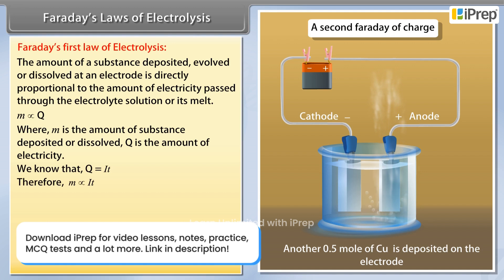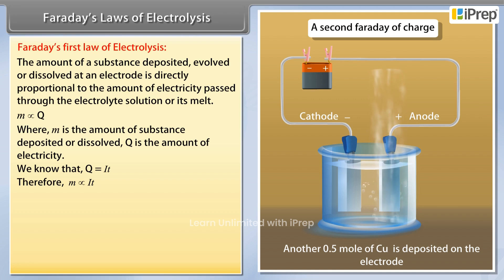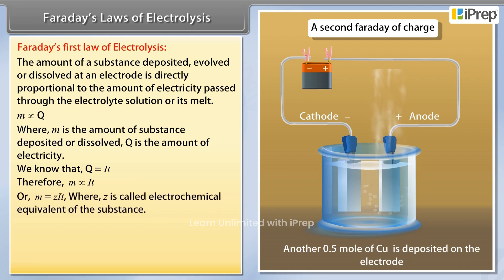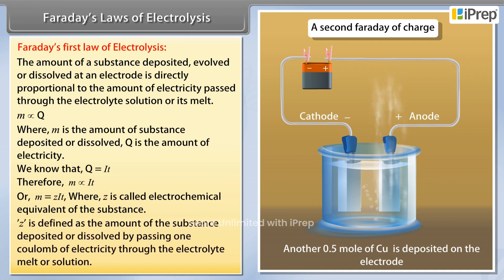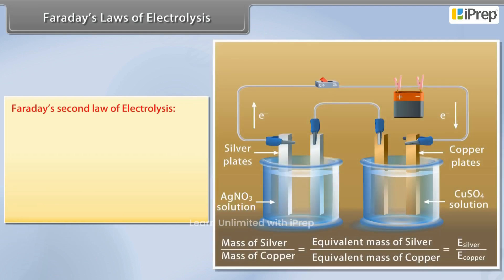Since q is equal to it, we have m is directly proportional to it, which can be written as m = zit, where z is called the electrochemical equivalent of the substance. z is defined as the amount of substance deposited or dissolved by passing one coulomb of electricity through the electrolyte melt or solution.